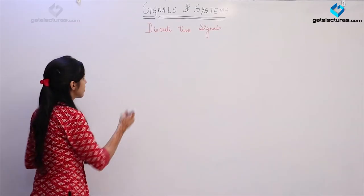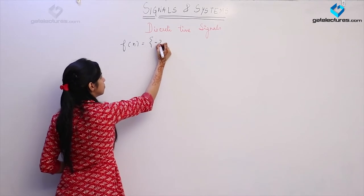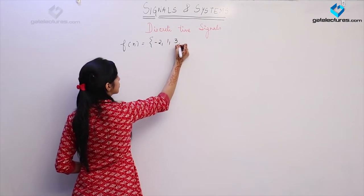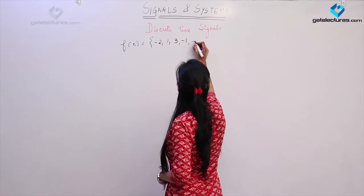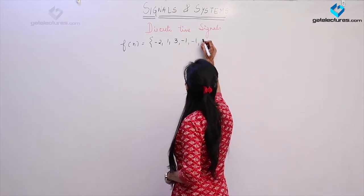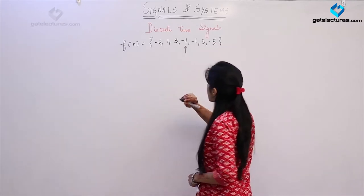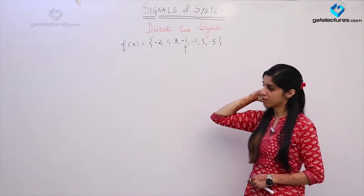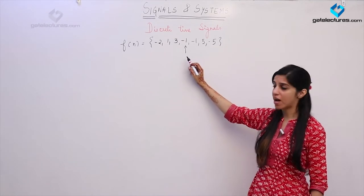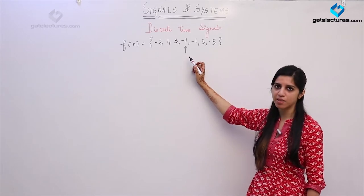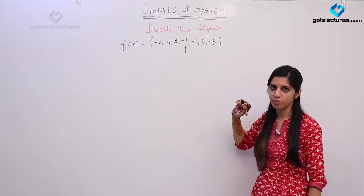We are considering a signal F(n). We are considering a discrete time signal which has values of samples as follows. This arrow represents the value of this signal at n equals 0. Now we are going to look at the various operations that we can perform.